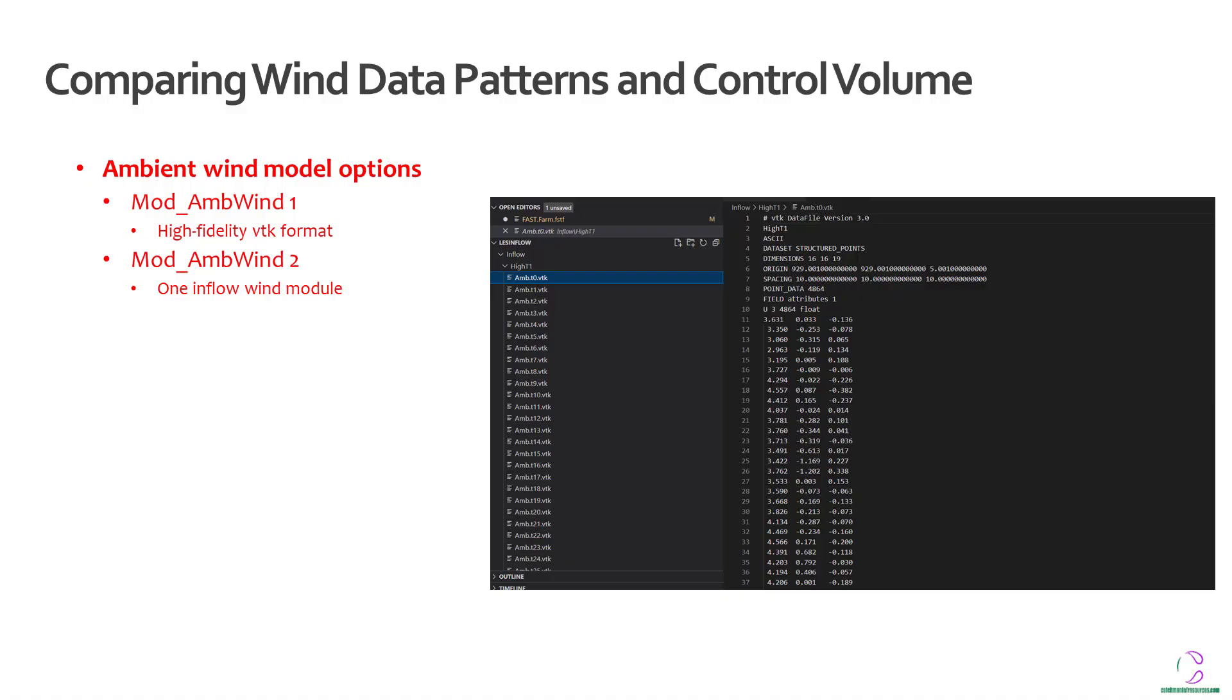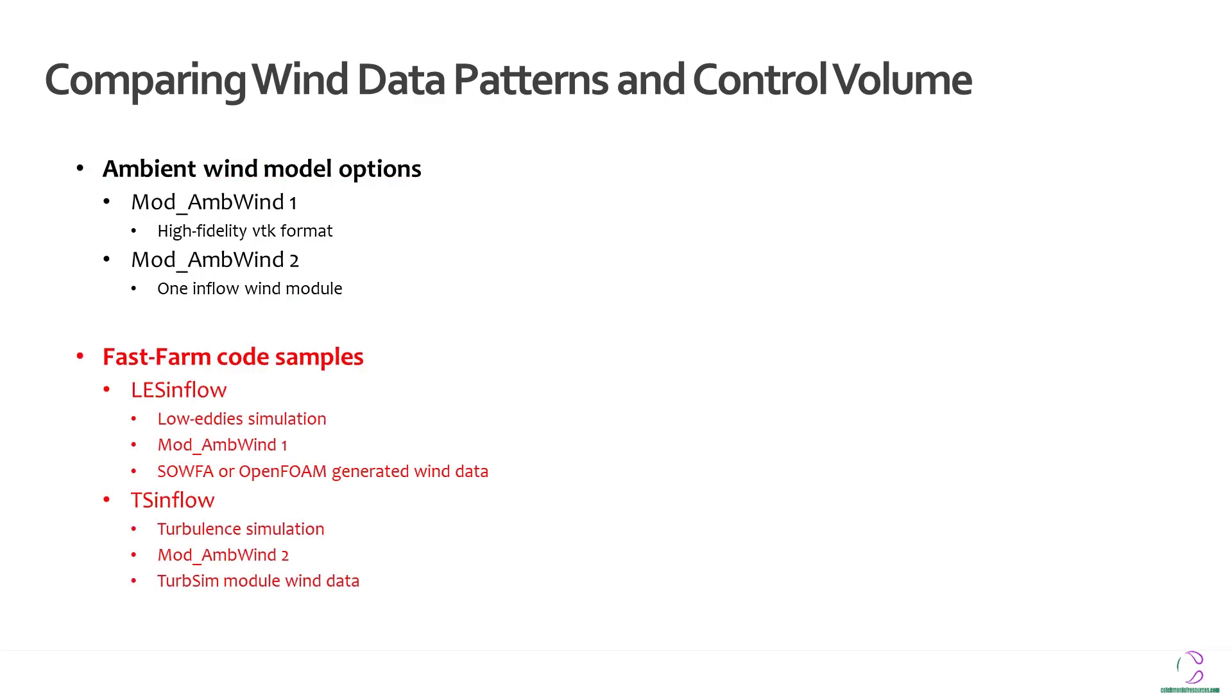Ambient wind model options you have for option 1, option 2, and they are 3, 4 and 5. But option 1 has to do with high fidelity VTK format while option 2, which is the ambient tool, has to do with the general inflow wind model which is the turbulent simulation. So these two kind of wind data are different. The first one has to do with the large eddy simulation which is LES and the other one is the general turbulent simulation.